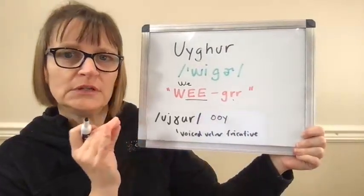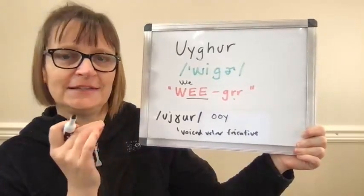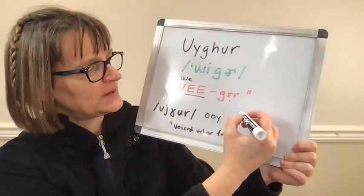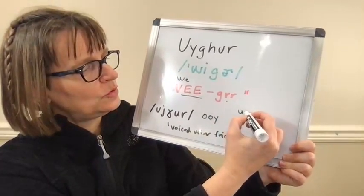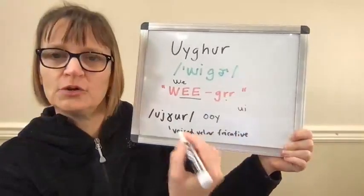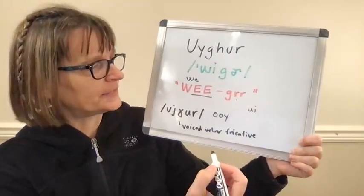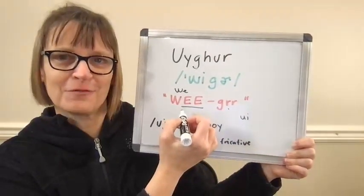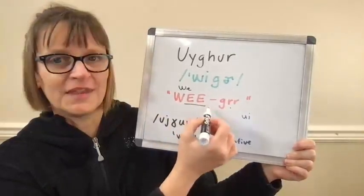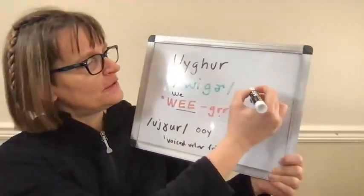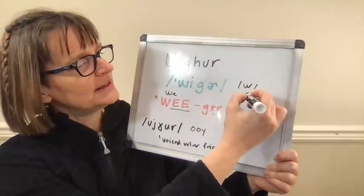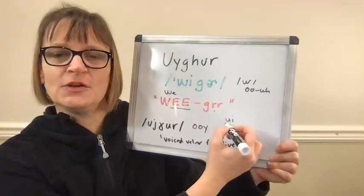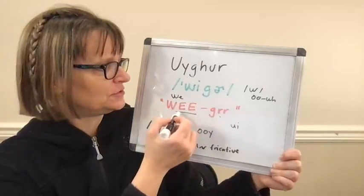We don't really have that U-Y combination in English, so it's hard for us. Some English speakers will do kind of an 'Uyghur' sound, which is actually maybe part of where our W sound comes from — our W is really a glide between a U and another vowel. And so if you do a U and an E, 'Uyghur,' you can hear how it sounds actually similar to 'we.' So this is not the worst pronunciation in the world. It's not the furthest from the authentic.